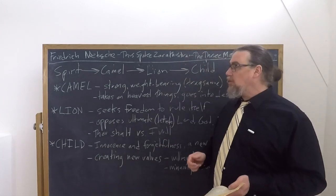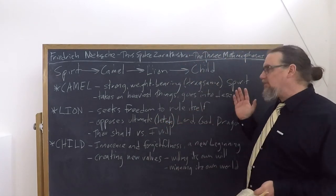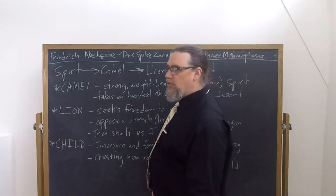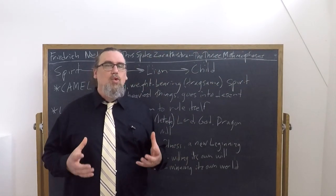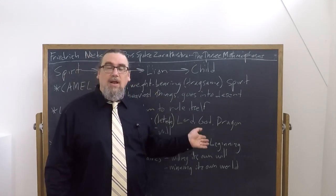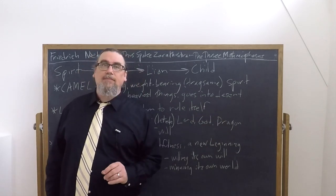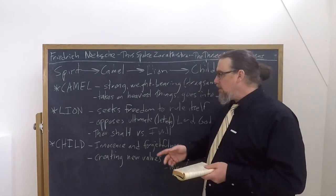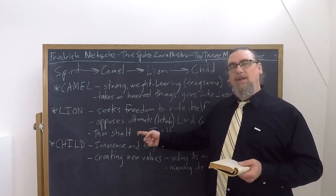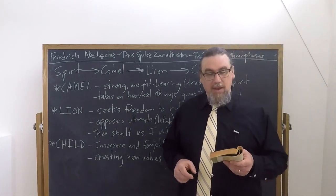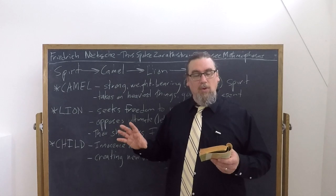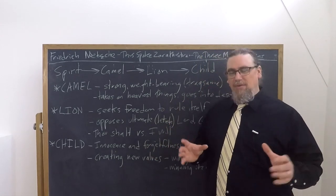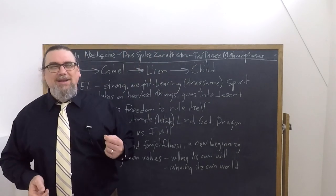So it seeks here its ultimate lord — its letzter Herr — and it will be an enemy to him and to its ultimate god, and it will struggle for victory with the great dragon. The great dragon is called 'thou shalt.' The spirit of the lion, in contrast, says to it: 'I will.' Thou shalt lies on its path, sparkling with gold, a scale-covered beast. On every scale glitters gold in 'thou shalt.' So it's not just one single imperative or rule or social more — instead, it's a thousand of them, it's an entire system.